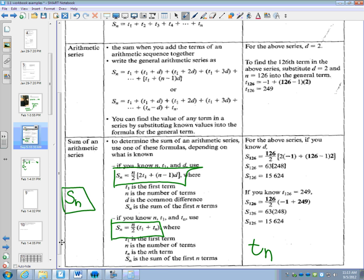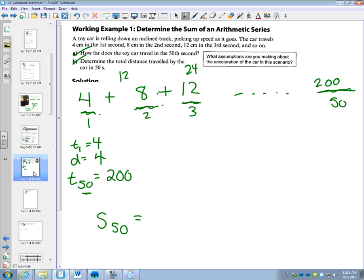I'm going to use this one because this one is shorter. So Sn equals n over 2 times the first and last term together. So that formula was Sn equals n over 2, and it's going to be the first term plus the last term.